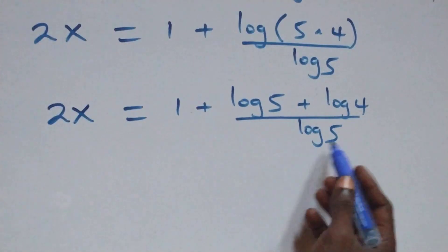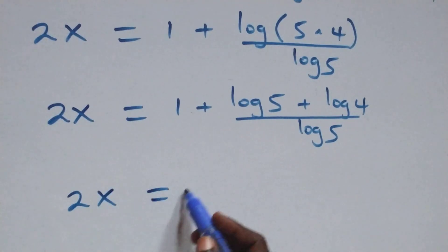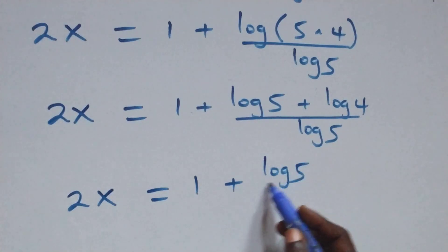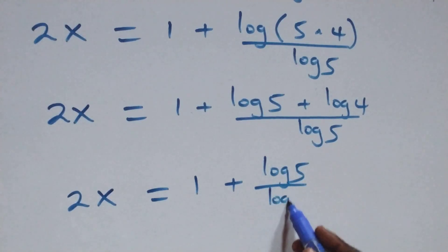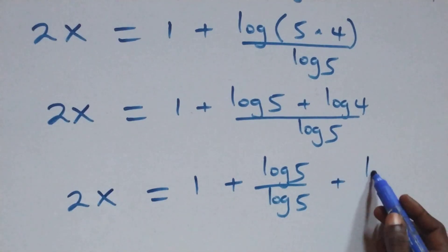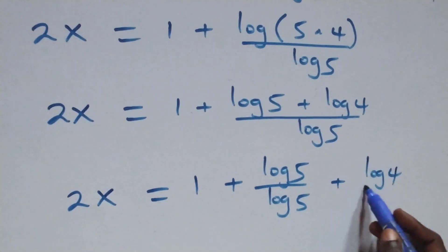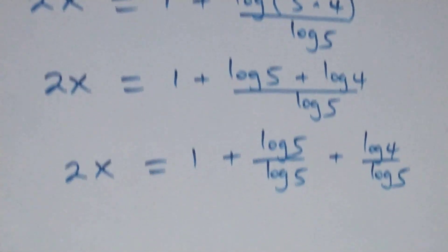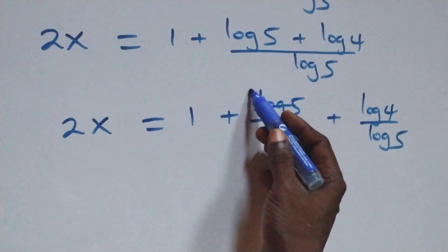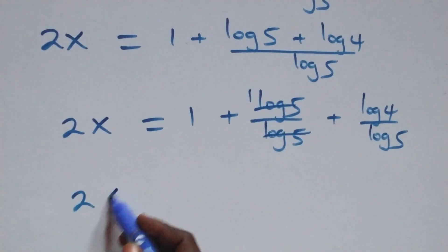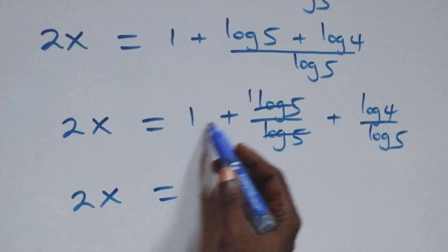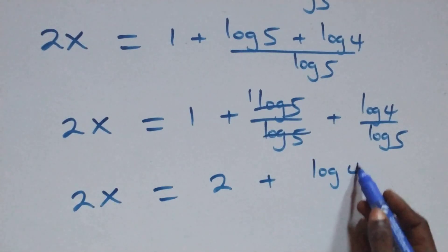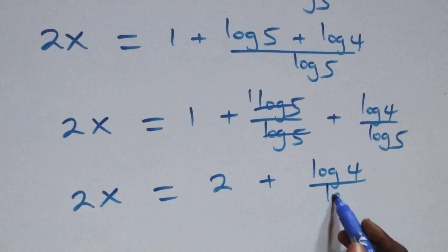We separate this into two fractions: 2x equals 1 plus log 5 over log 5 plus log 4 over log 5. Log 5 over log 5 also cancels to give 1. So 2x equals 1 plus 1, which is 2, plus log 4 over log 5.